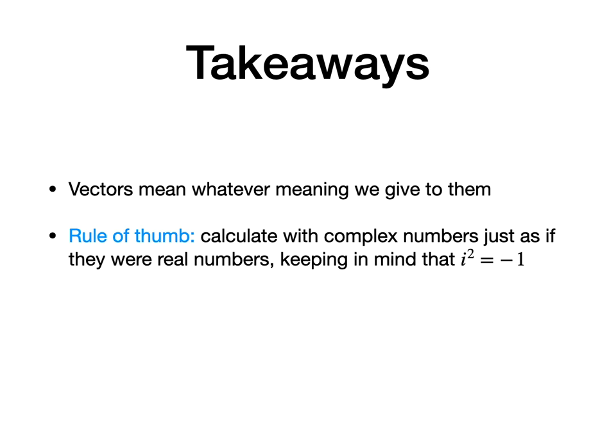In summary, I want you to remember two things. One is that vectors mean whatever meaning we give to them, and the other is that we can calculate with complex numbers just as if they were real numbers, keeping in mind that i times i equals minus 1.